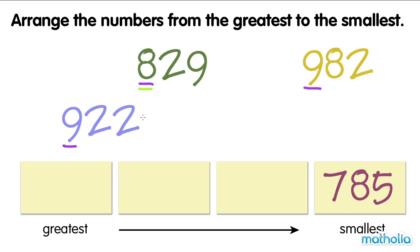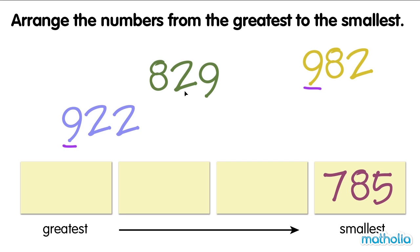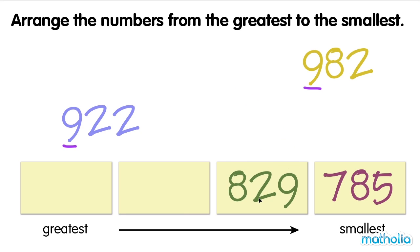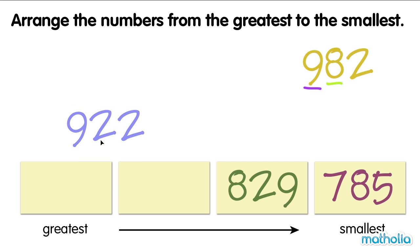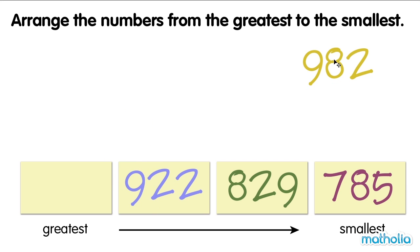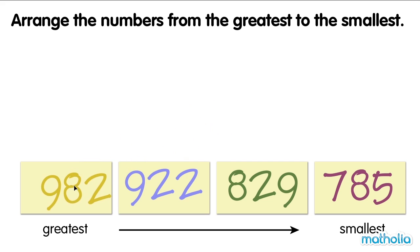Eight is smaller than nine. So, eight hundred and twenty-nine is the next smallest number. Nine hundred and eighty-two is the greatest number. Now, the digits in the hundreds place are the same — they are both nine. So, let's move on to compare the digits in the tens place: two, two, and eight. Two is smaller than eight. So, nine hundred and twenty-two is the next smallest number. Nine hundred and eighty-two is the greatest number.